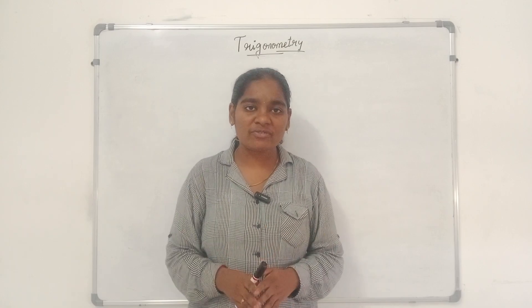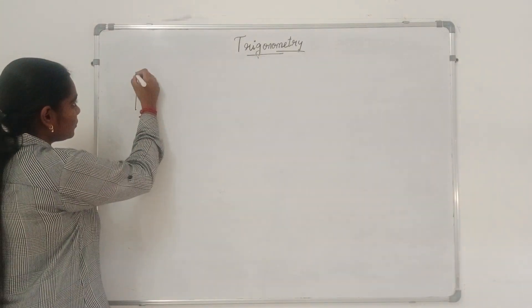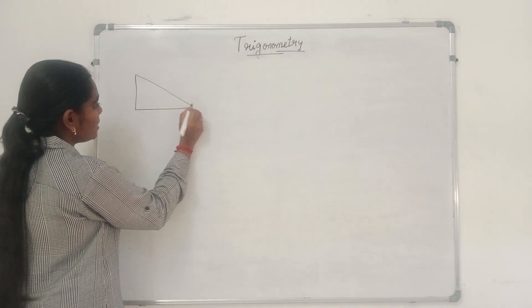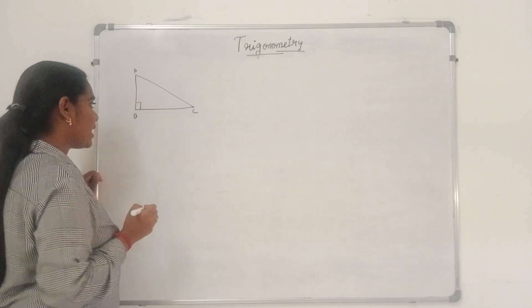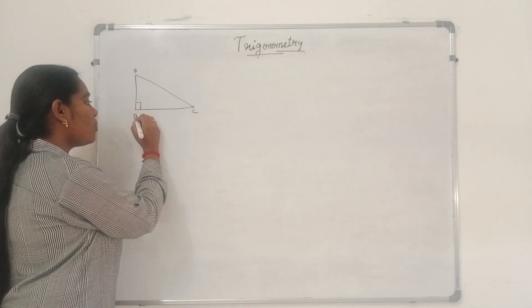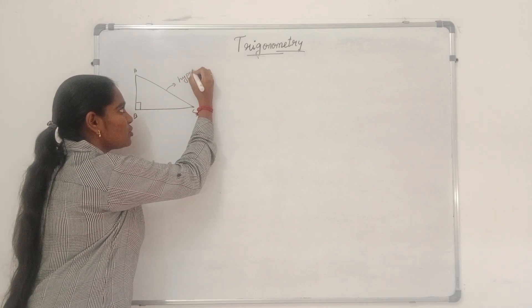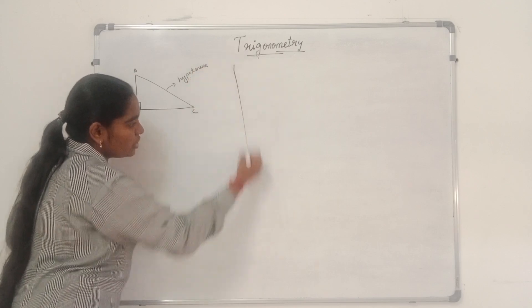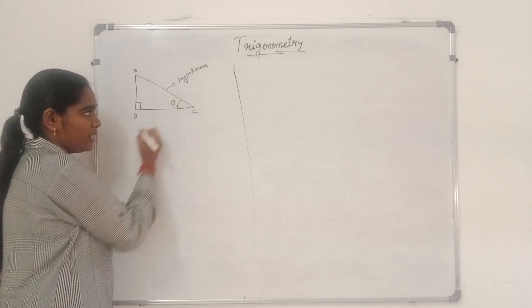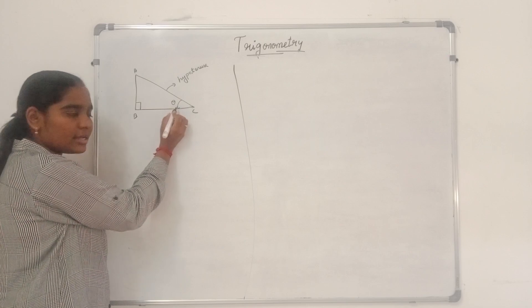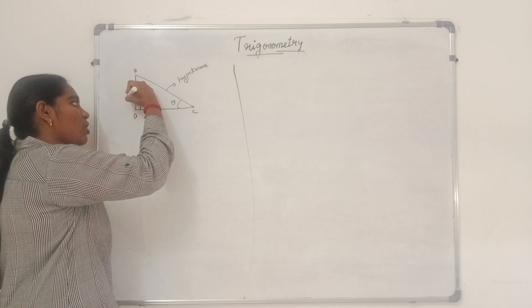In trigonometry, in most cases we will deal with a right-angled triangle. Consider a right-angled triangle A, B, C. This triangle is right-angled at B. So this side opposite to this right-angle is known as hypotenuse. If you are taking theta angle here, then the opposite side is this one.